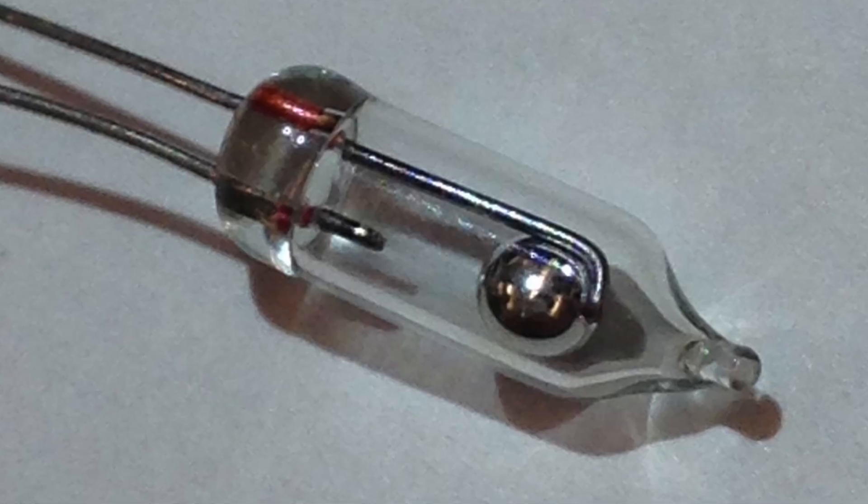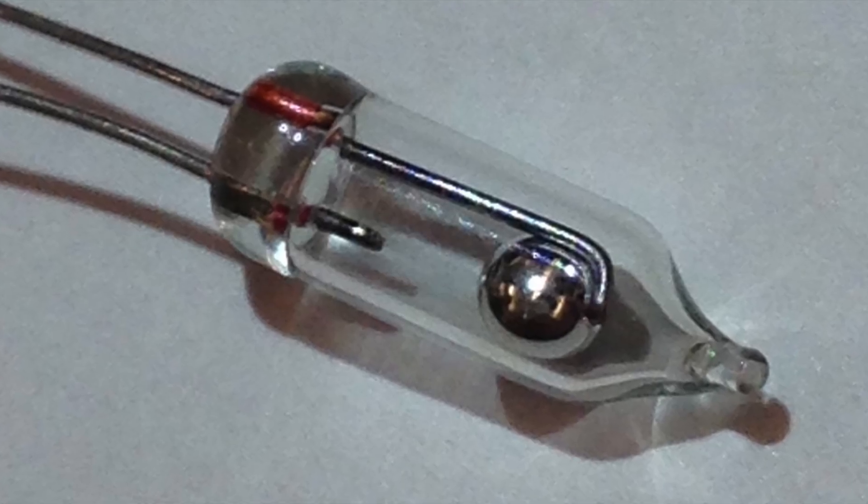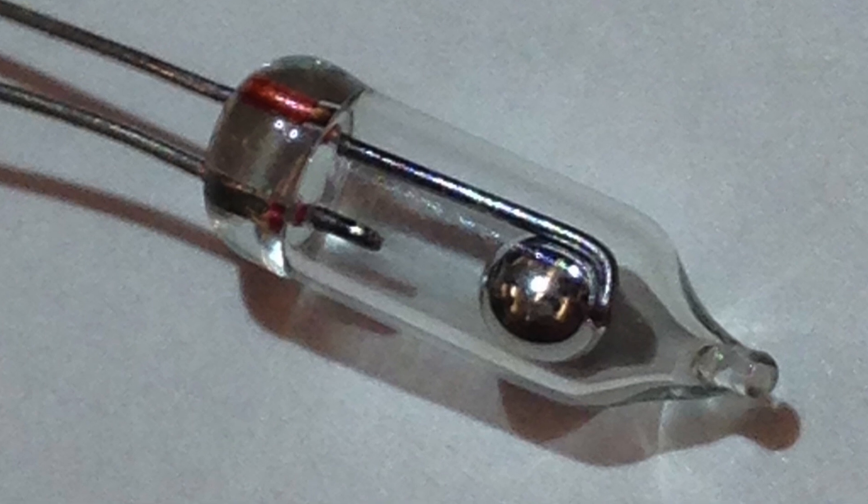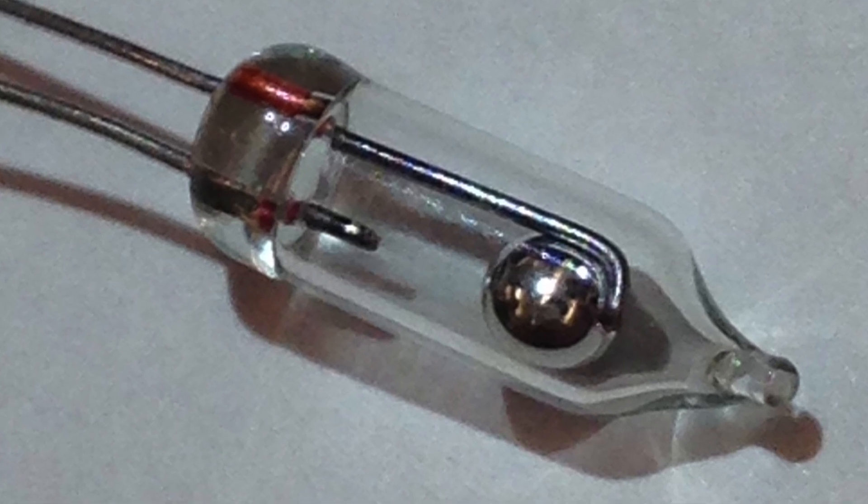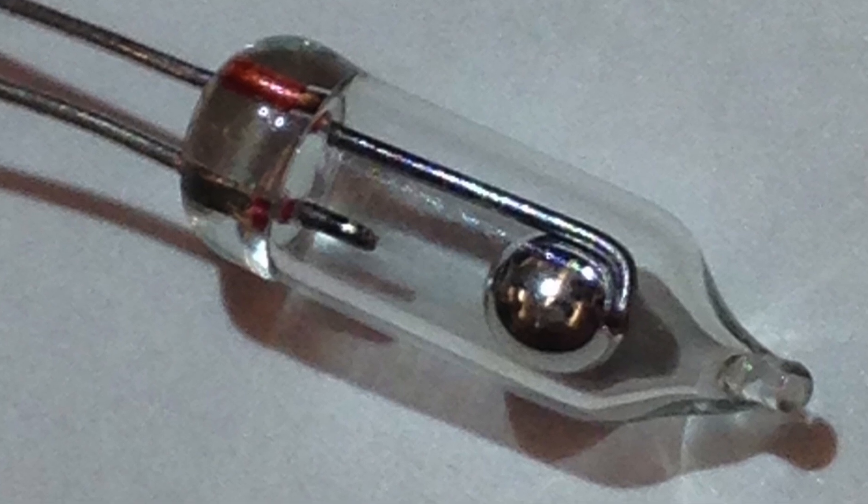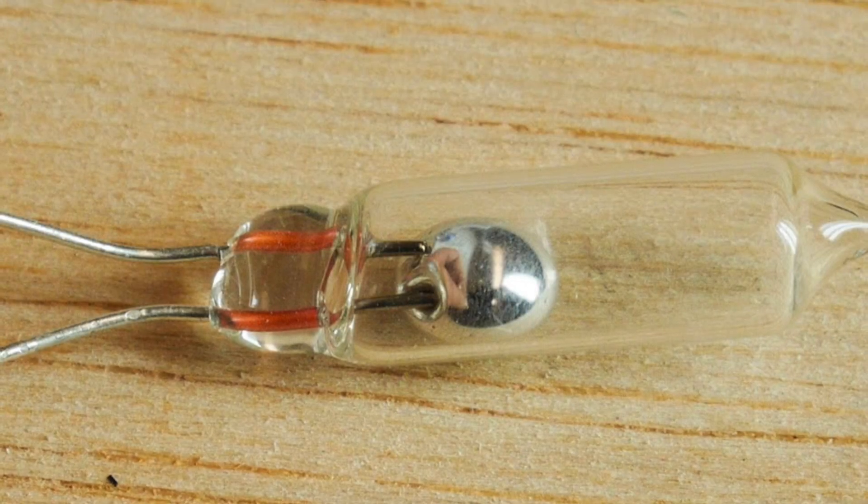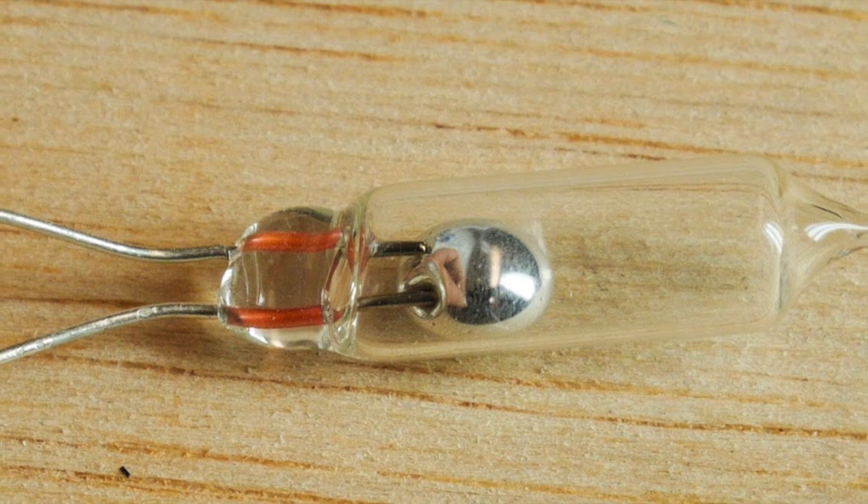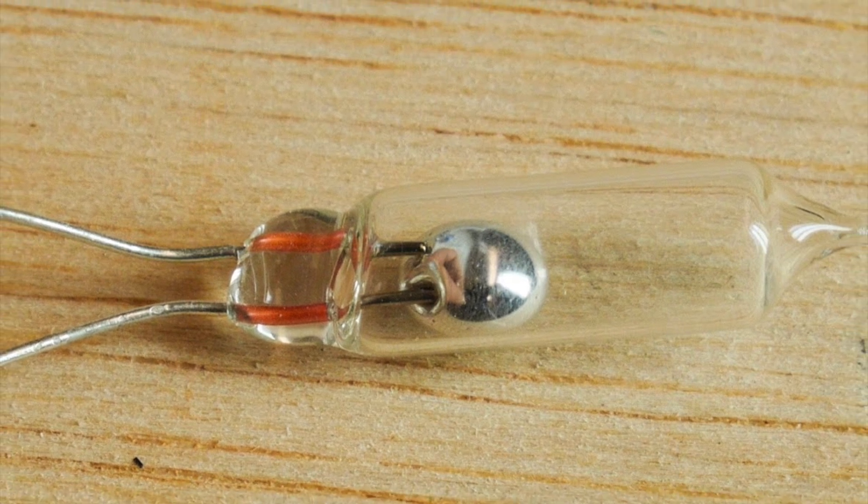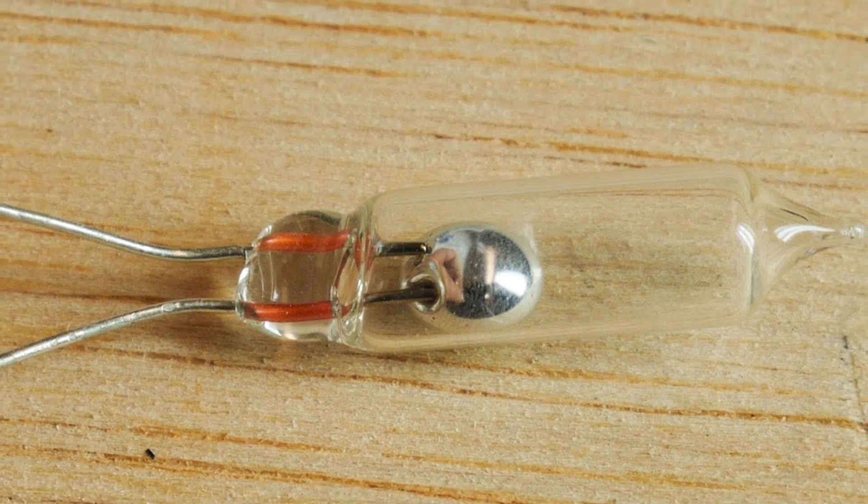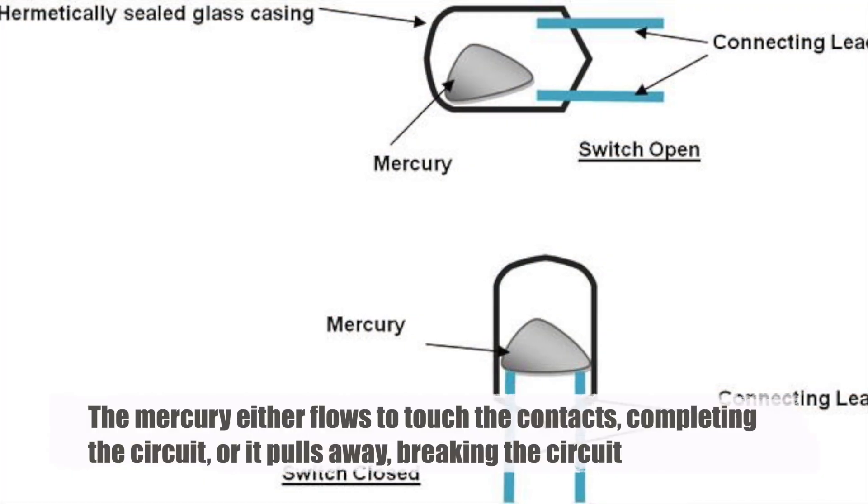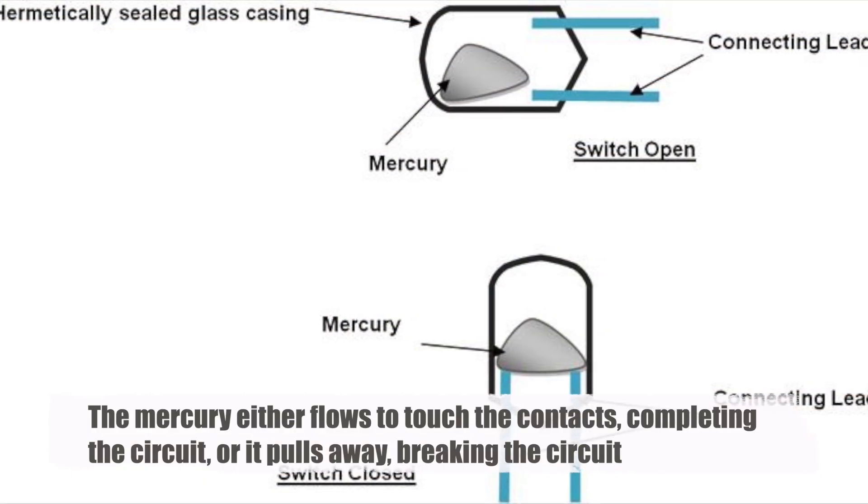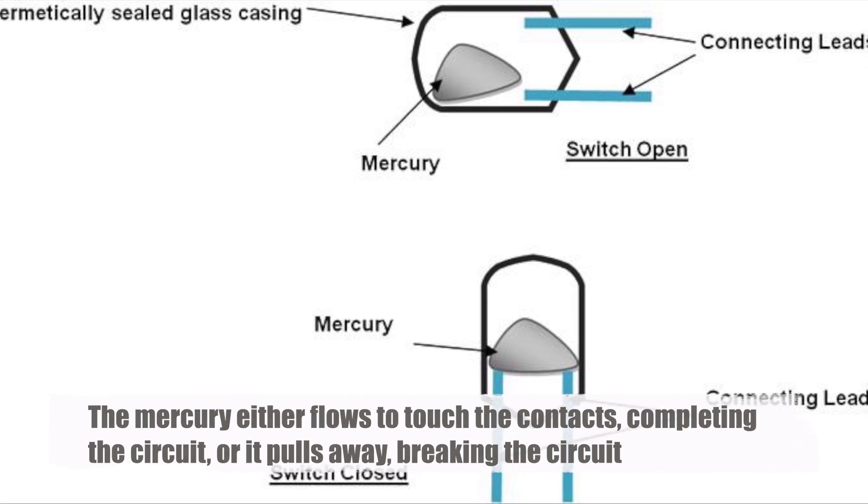Now that you get the basic idea, let's look a little deeper into how it works. Think of the mercury inside the switch as a tiny metallic blob, kind of like those silvery liquid blobs you might have seen in science class. This mercury is sealed inside a glass or metal container with one or more pairs of contacts. Depending on how the switch is oriented or tilted, the mercury either flows to touch the contacts, completing the circuit, or it pulls away, breaking the circuit.